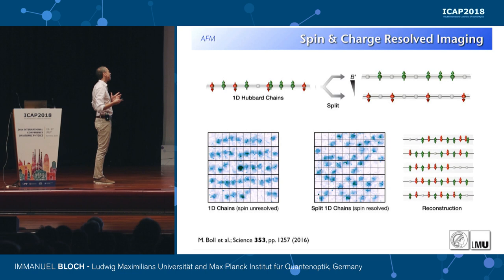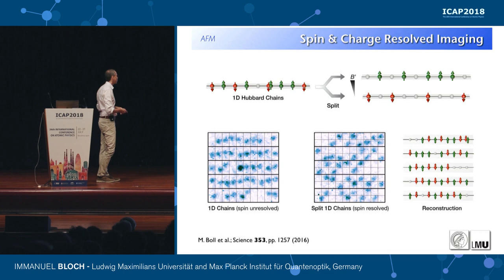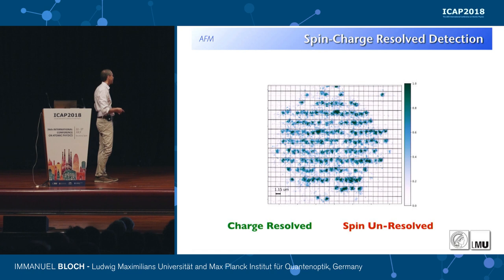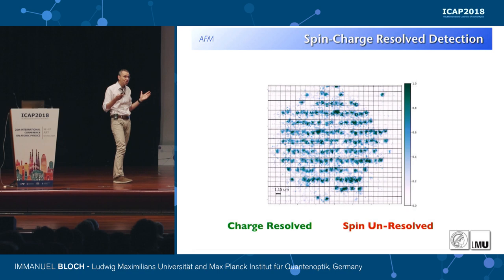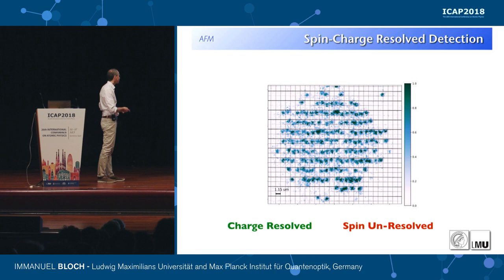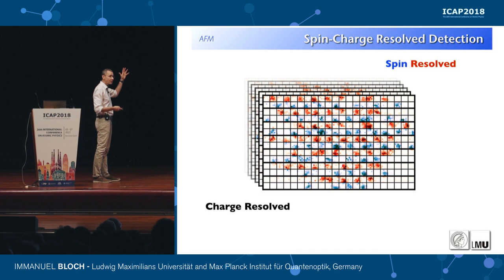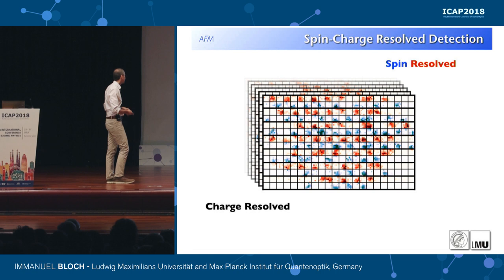This is what colleagues in quantum Monte Carlo simulations would call a single snapshot of the configuration of the system, and it is unique to the Munich experiment that we can see spins and holes simultaneously. In the charge-resolved but spin-unresolved case we see density; after the Stern-Gerlach separation we can see beautifully how spin and charge become completely resolved and see all configurations in the system.